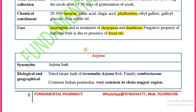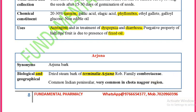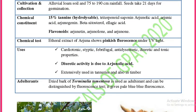The next drug is Arjuna, synonym Arjuna bark. The biological source is the stem bark obtained from Terminalia arjuna, family Combretaceae. It is mostly found in the Indian peninsular region and is very commonly found in the Chhota Nagpur region. It consists of 15% hydrolyzable tannins.